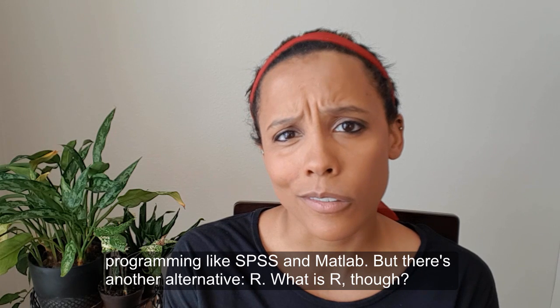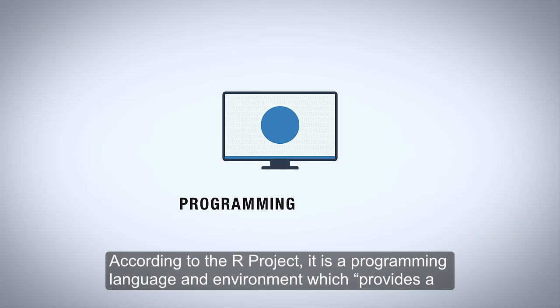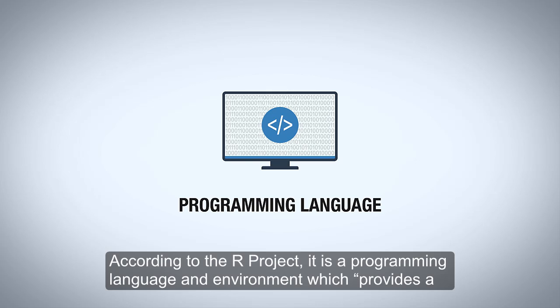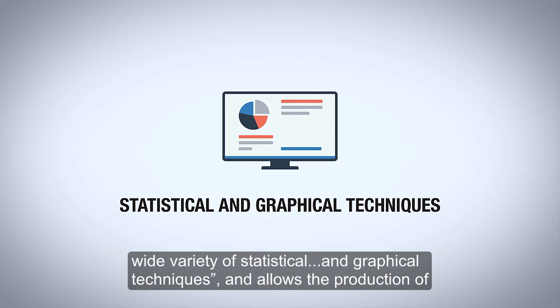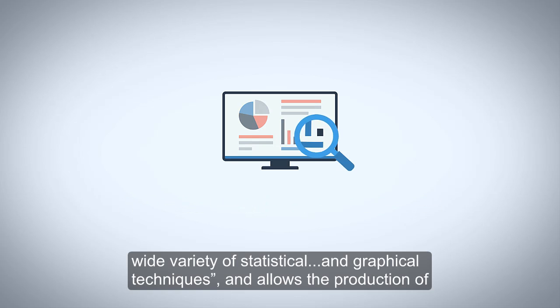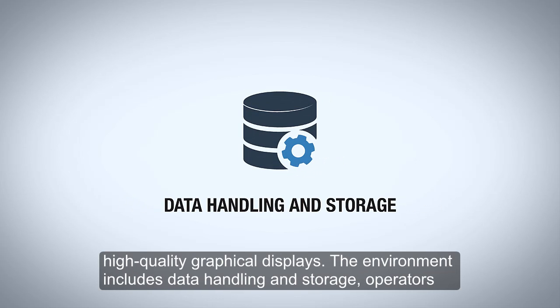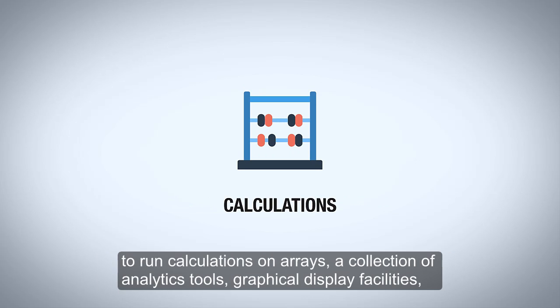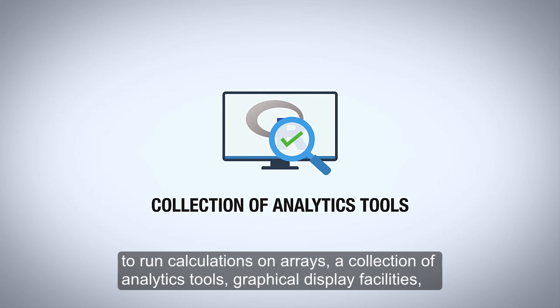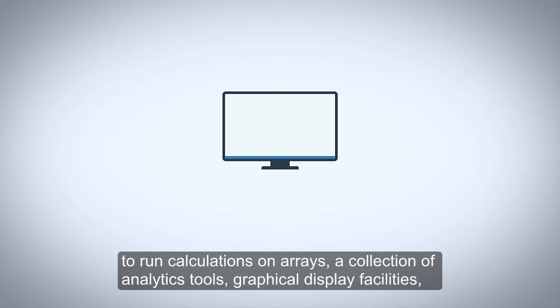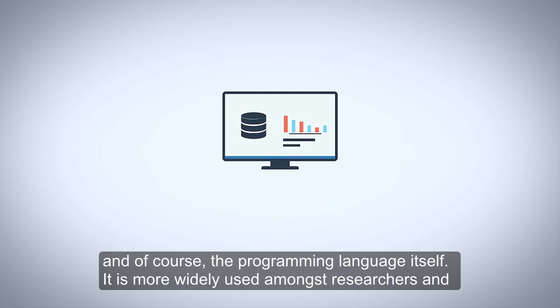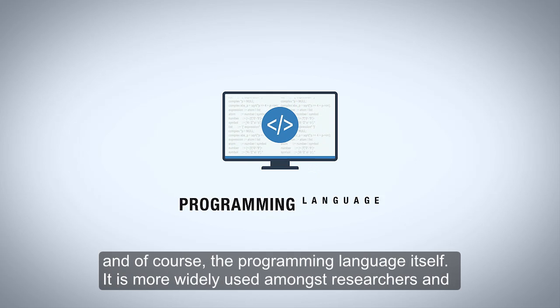What is R? According to the R project, it's a programming language and environment which provides a wide variety of statistical and graphical techniques and allows the production of high-quality graphical displays. The environment includes data handling and storage, operators to run calculations on arrays, a collection of analytics tools, graphical display facilities, and of course the programming language itself.